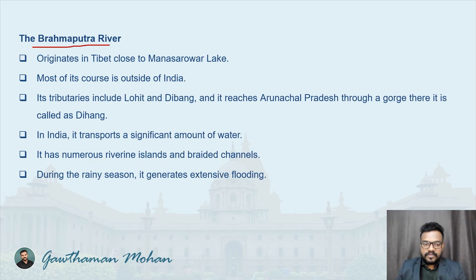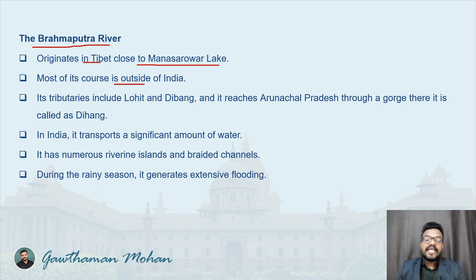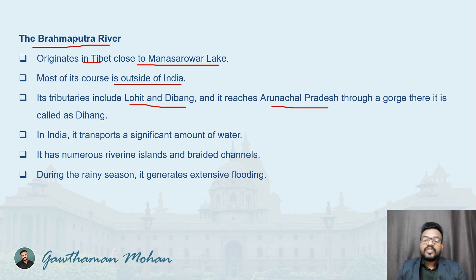The Brahmaputra river originates in Tibet, close to Manasarovar Lake. Like the Indus, most of its course is outside India. Its tributaries include Lohit and Dibang. It reaches Arunachal Pradesh through a gorge, where it is called Dihang. Three important names are significant: Lohit, Dibang, and Dihang when it enters Arunachal Pradesh.